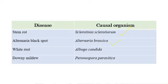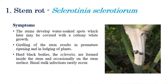Stem rot, which is caused by Sclerotinia sclerotiorum; Alternaria black spot, which is caused by Alternaria brassica; white rust, which is caused by Albugo candida; and downy mildew, which is caused by Peronospora parasitica. Now we'll see each one in detail.